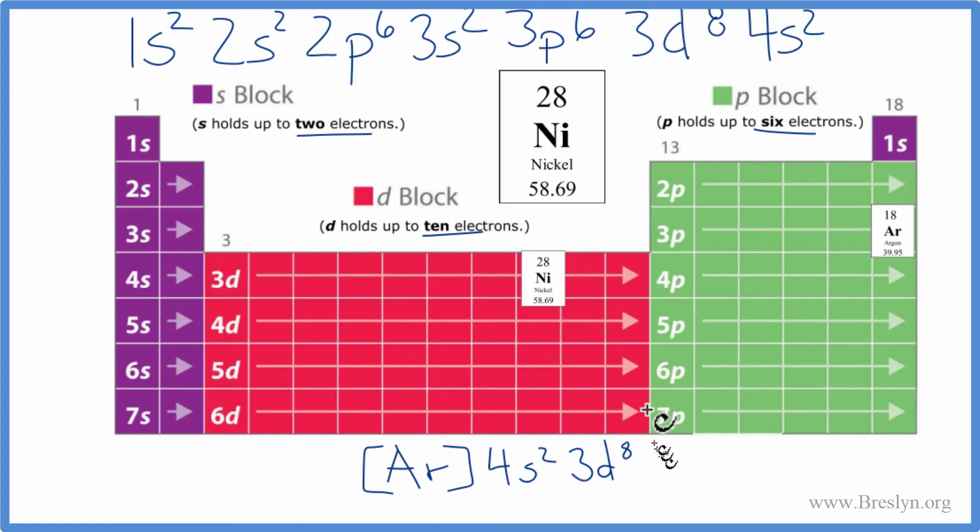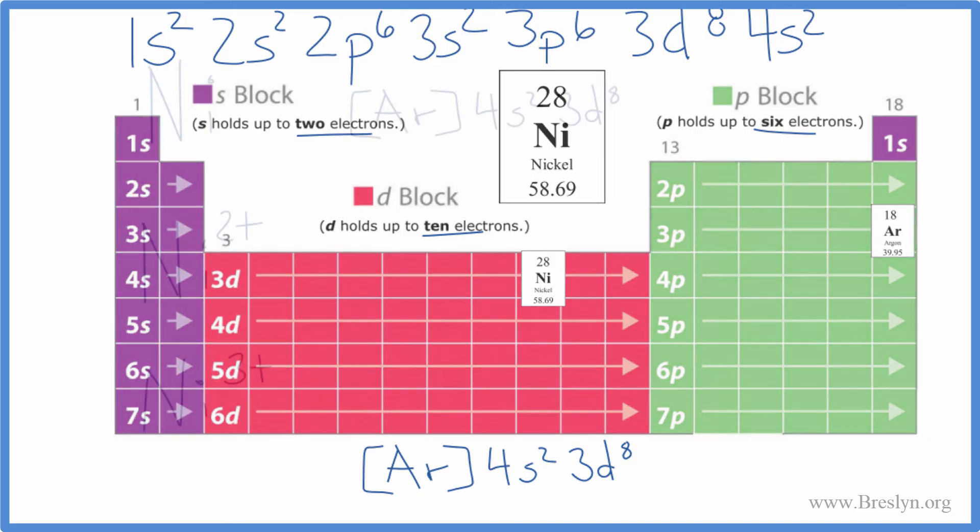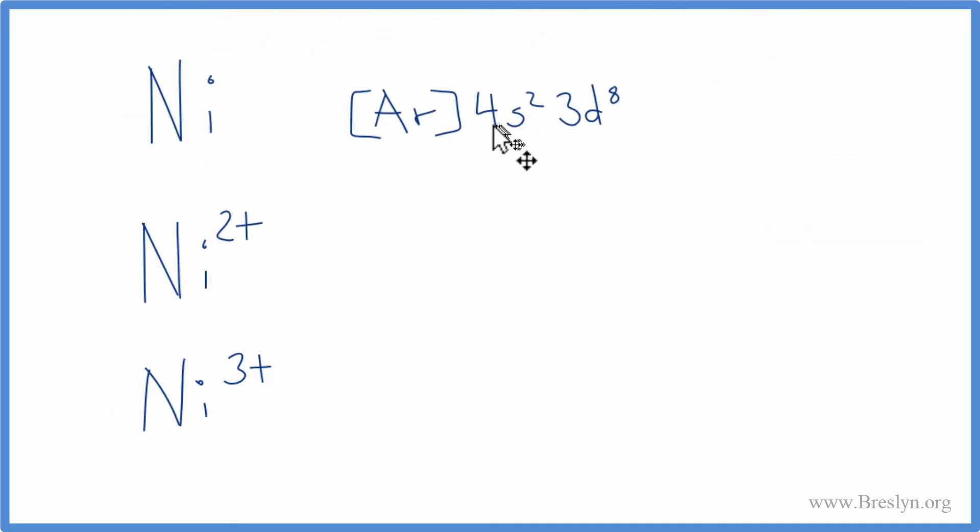Let's use this to write the electron configuration for Ni²⁺ and then Ni³⁺. So remember that we had the 4s written after the 3d. Let's do that. For Ni²⁺, that means that we've lost two electrons. You lose electrons, which are negative, you become positive. So we have Ni²⁺; we lost two electrons. So let's just get rid of these electrons here in the 4s².